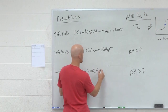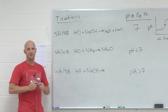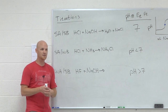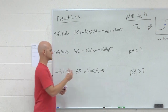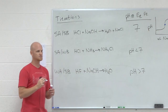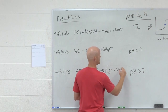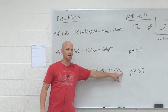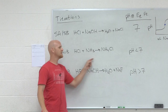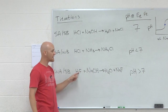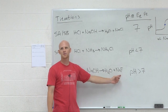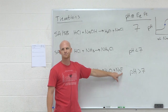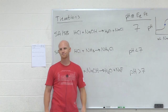For the weak acid-strong base titration, the products at the equivalence point are water and NaF. Sodium ions are negligible, but fluoride ions are not — they act as a base. Fluoride will react with water in solution to produce some hydroxide, which is why the pH is basic at the equivalence point. The correct explanation is that the product salt is basic.